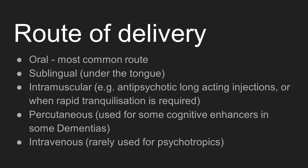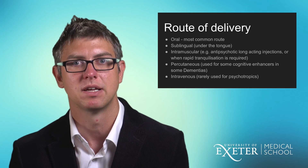We sometimes use the intramuscular route — for example for antipsychotic depot or long-acting injections, or when someone is so agitated they are unable to accept medication orally and you need a quick effect. Some medications are available in percutaneous patches — some of the cognitive enhancers used in dementia come in this form. The advantage of patches is that they stay on for several days, making it much less likely doses will be forgotten, and they're easy for a carer to apply. Finally, intravenous is very rarely used, but on occasion a patient already admitted to a general hospital with IV access may be best managed via that route.